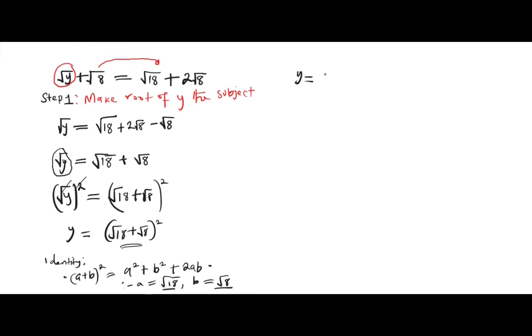a², which is now (√18)² plus b², which is (√8)², plus 2 into a, which is now √18, times b, which is √8.